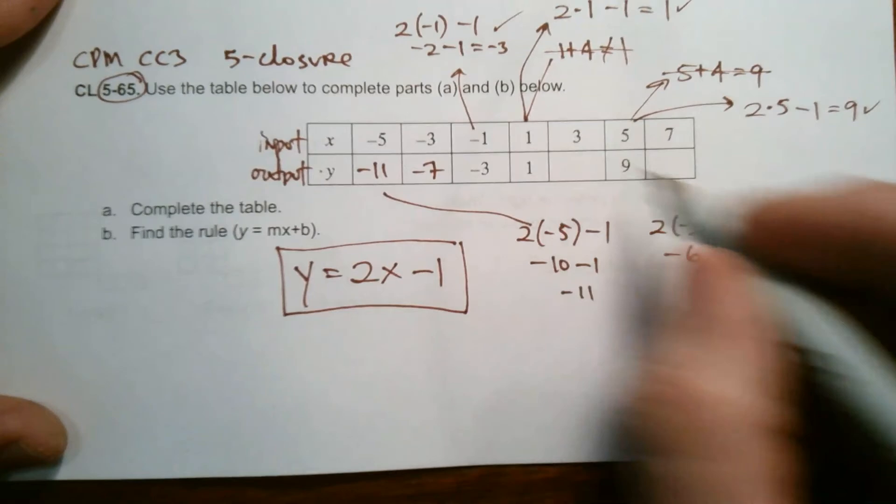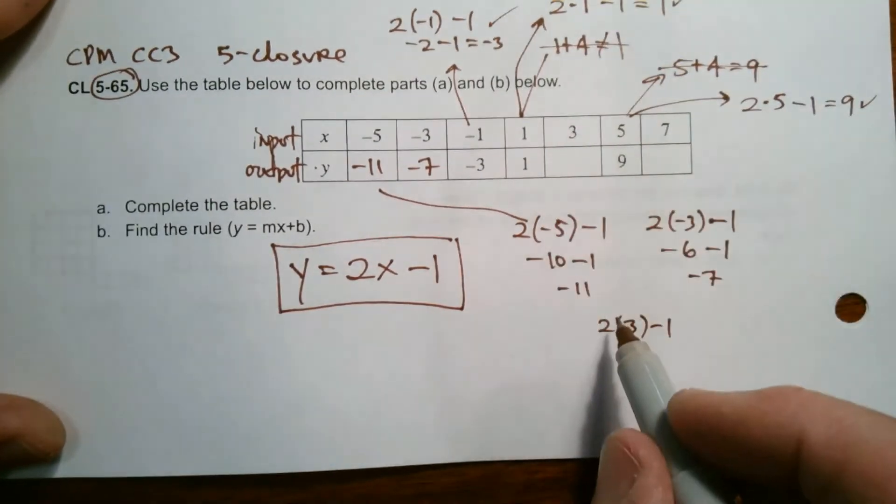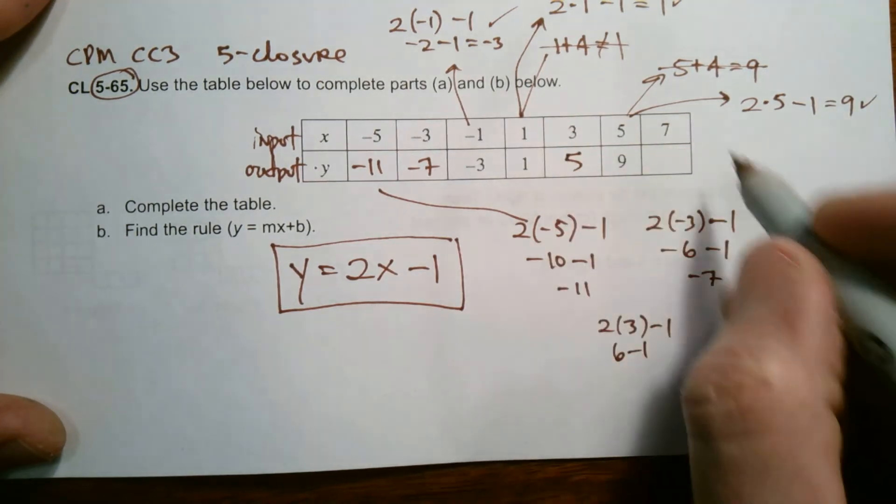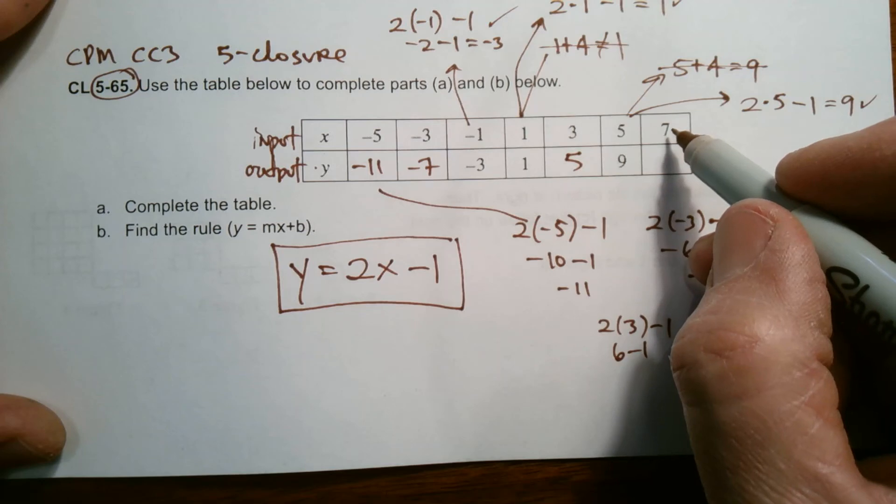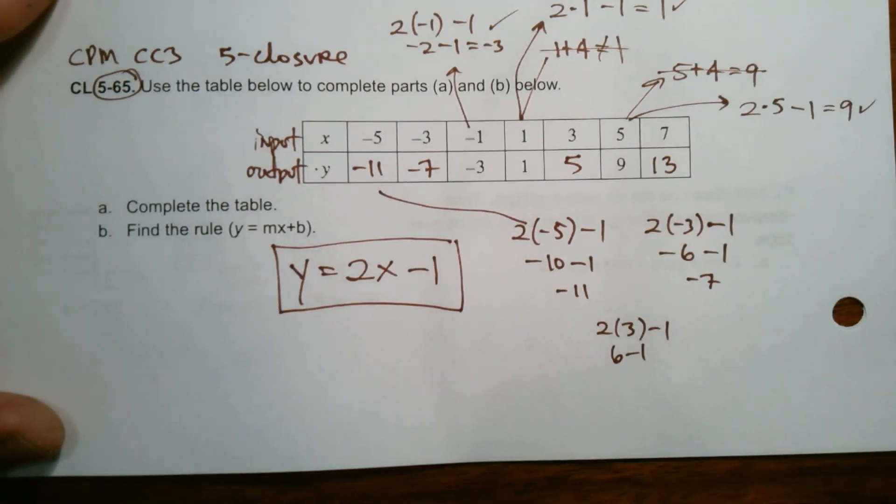Then three. So two times three minus one, two times three, that's what I'm putting in is six, six minus one is five. The last one, two times seven is 14 minus one makes that 13. Okay. There we go.